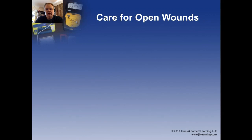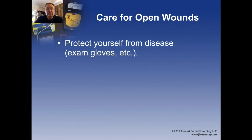Now let's talk about some finer details of caring for open wounds. First, you want to make sure you're protecting yourself — scene safety. No fire, no environmental hazards, no glass or debris, no chemicals or explosive agents, no electricity, no human or animal predators. Then protect yourself from disease with exam gloves at a minimum. If you've got active arterial bleeding, you may also need a gown, face mask, and eye protection.